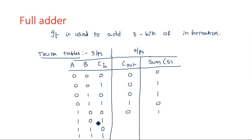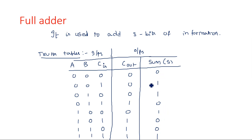Wherever you have two ones among the three inputs, carry will be 1 and sum will be 0. For 111 (three ones): one plus one is ten, and ten plus one is eleven — so sum = 1 and carry = 1. The complete truth table for the full adder has sum pattern 0,1,1,0,1,0,0,1 and carry pattern 0,0,0,1,0,1,1,1.